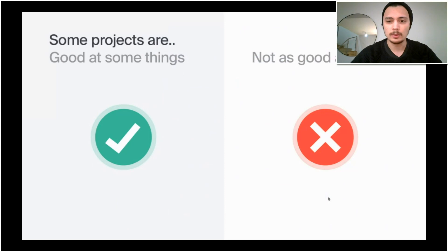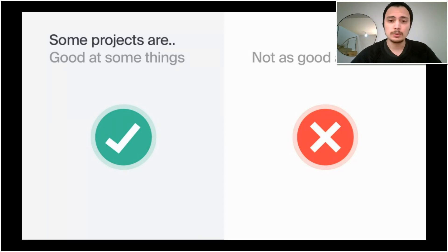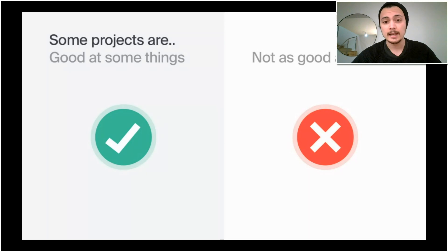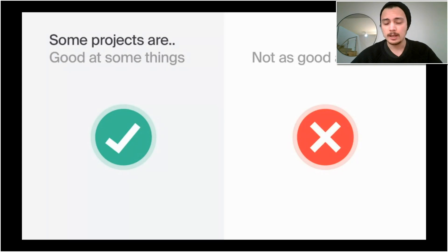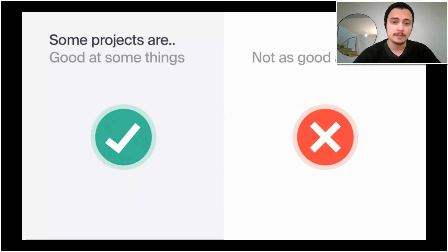So why do we want this? Basically, it comes down to the fact that some projects are good at some things and some projects are bad at some things. These could be technical solutions — things like transaction throughput or transaction finality — but it can also be a financial thing, like market capitalization or liquidity, or even a community thing, like marketing and user adoption, or the grassroots DeFi ecosystem that a blockchain like Ethereum has.